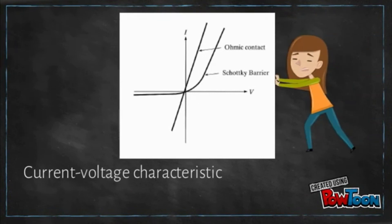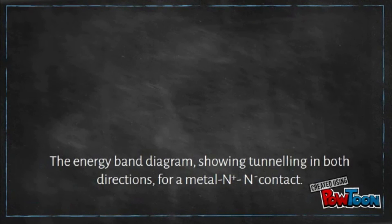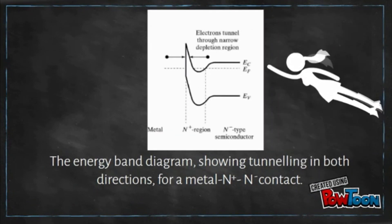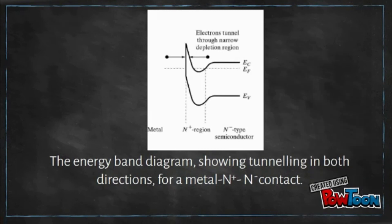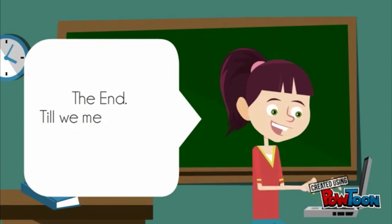The current-voltage characteristics of a Schottky barrier diode and an ohmic contact is shown in this figure. Lastly, this figure shows the energy band diagram illustrating tunneling in both directions for a metal contact with both positive N and negative N contact. The end — till we meet again, thank you, bye!